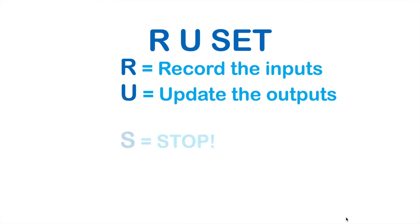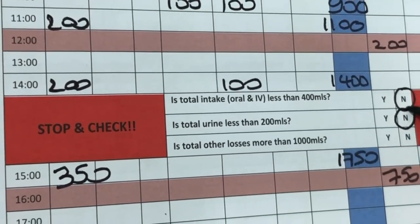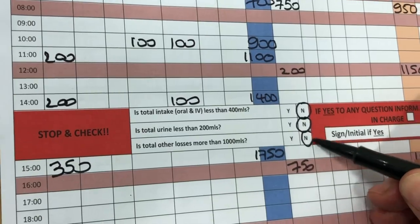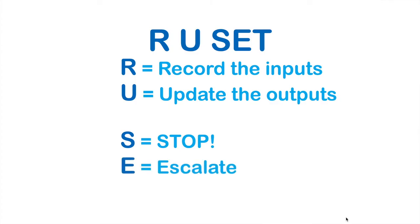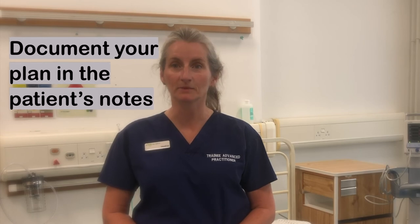S: Stop. Twice a day you should evaluate your chart. At 2pm the chart must demonstrate the assessment of the recorded volumes — empty drainage bags of urine now. E: Escalate. If a patient hasn't met the target volume of fluid in or out within this time, this is an early warning indicator and needs escalating to a senior clinician. Remember to document your plan to address this in the patient's notes.